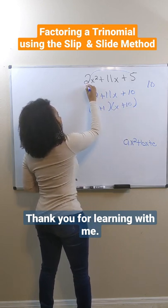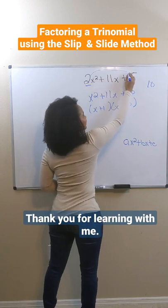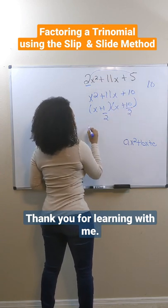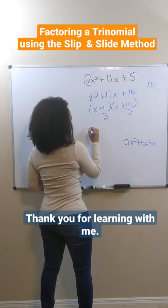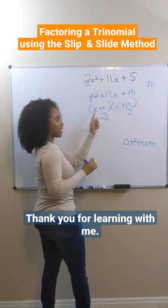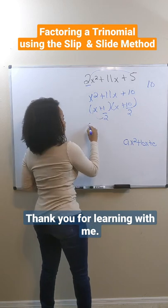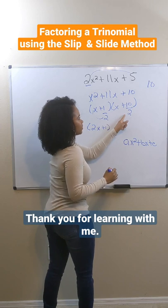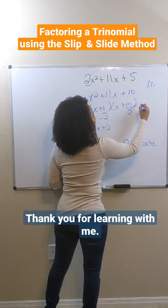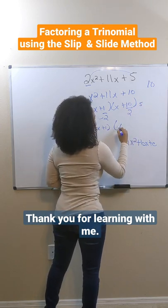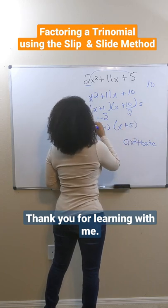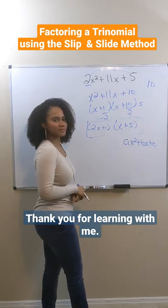Then I want to slide whatever I slid right here underneath my factors. If I can reduce, I do that. In this case, I cannot reduce, so I can write this as 2x plus 1. I can reduce this, so that will reduce to 5. So I have factored this trinomial.